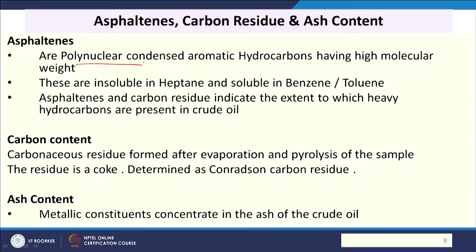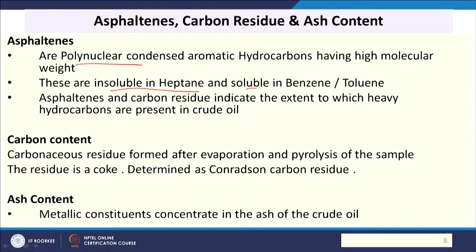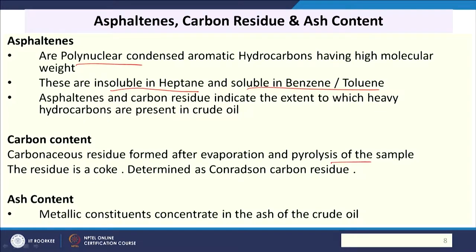Now we will see asphaltenes, carbon residue, and ash content. Asphaltenes are basically related with the residual part — more asphaltene means more vacuum residue. Asphaltenes are polynuclear condensed aromatic compounds, insoluble in heptane but soluble in benzene-toluene solvent, and their differential solubility can be used for determination. Carbon residue is a carbonaceous material — when you evaporate and pyrolyze the sample at specific conditions, the remaining residue is called carbon residue, determined by the conradson method.